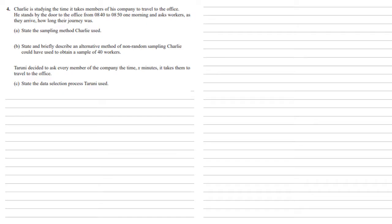Charlie is studying the time it takes members of his company to travel to the office. He stands by the door to the office from 8:40 to 8:50 one morning and asks workers as they arrive how long their journey was. For Part A, we need to state the sampling method that Charlie has used. As he's just standing there for a period of time asking anyone and everyone who comes past, we say that he's used convenience or opportunity sampling.